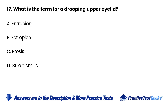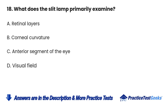17. What is the term for a drooping upper eyelid? A. Entropion B. Ectropion C. Ptosis D. Strabismus